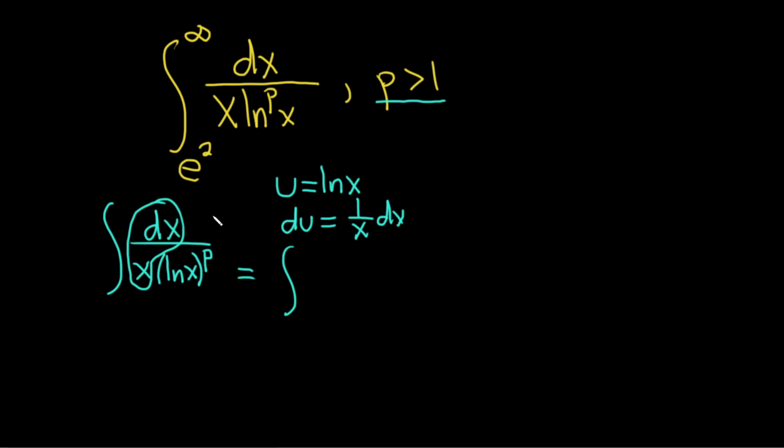So this is equal to, well, we simply have du, which is this piece here, du. And then the natural log of x is just u. So it's du over u to the p.